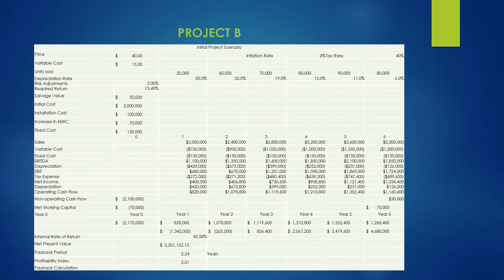Project B requires an initial investment of $2 million in equipment, which will cost an additional $100,000 to install. Acme will use the attached depreciation schedule to expense the equipment. Once the equipment is installed, the company will need to increase the net working capital by $70,000. The project will last six years, at which time the market value for the equipment will be $50,000. Project B will produce a product with a sales price of $40 per unit, and the variable cost per unit will be $15. The fixed cost will be $150,000 per year. Because this project is not close to current products sold by Acme, management wants to impose a two percentage point increase over the firm's weighted average cost of capital as the evaluation hurdle the project must meet or surpass.